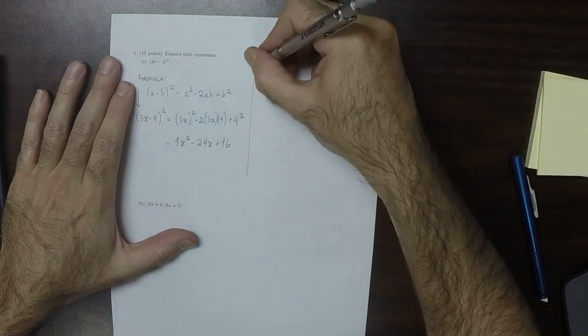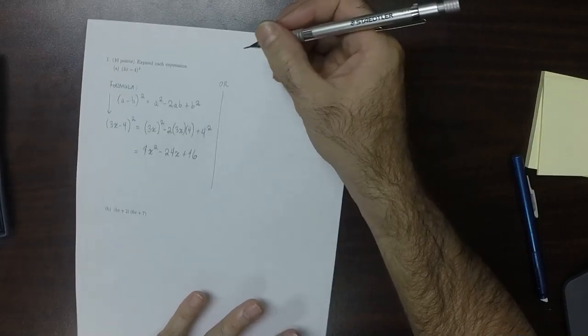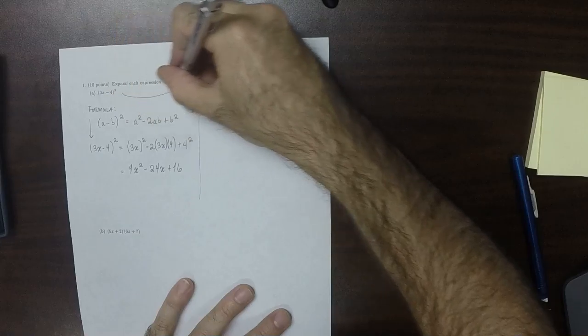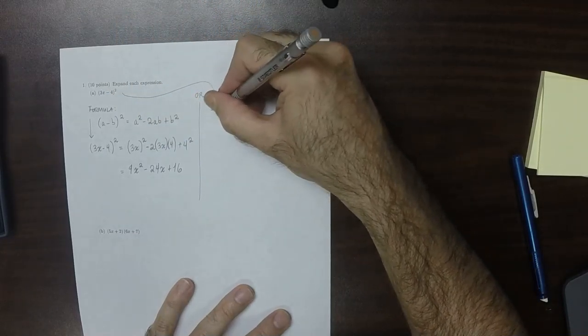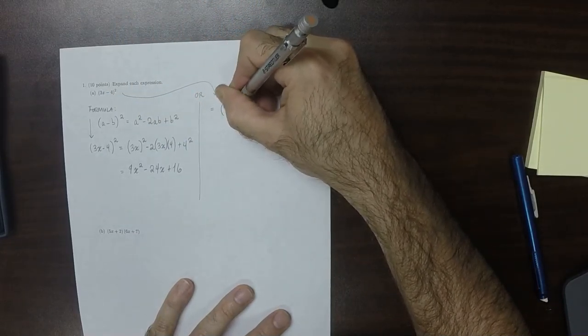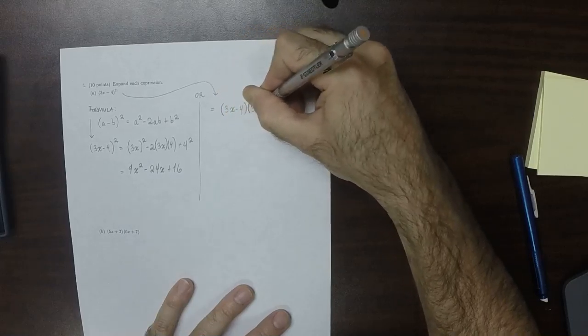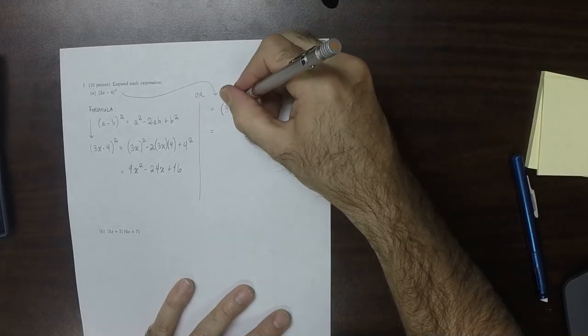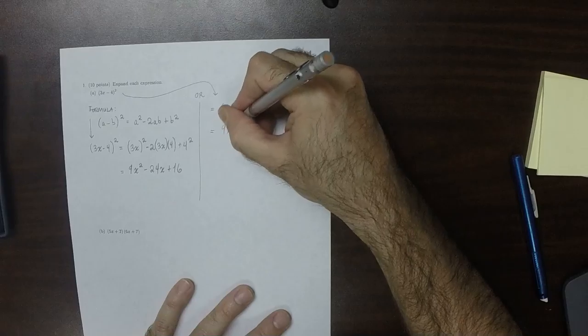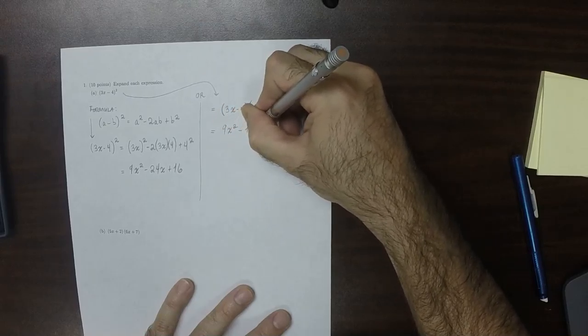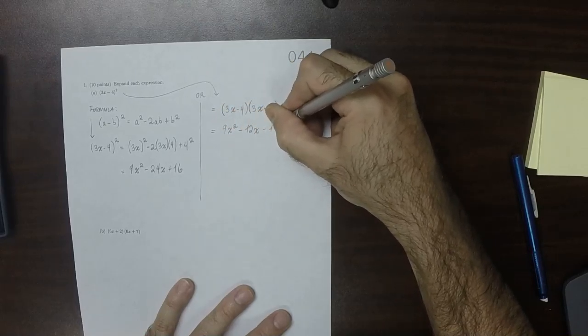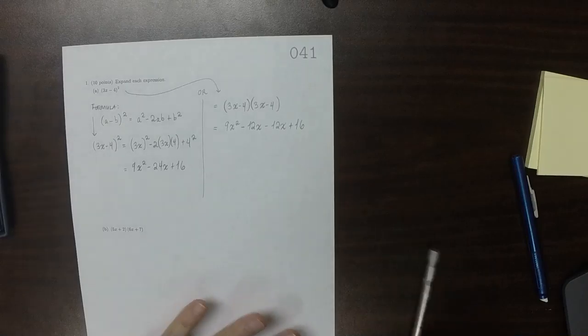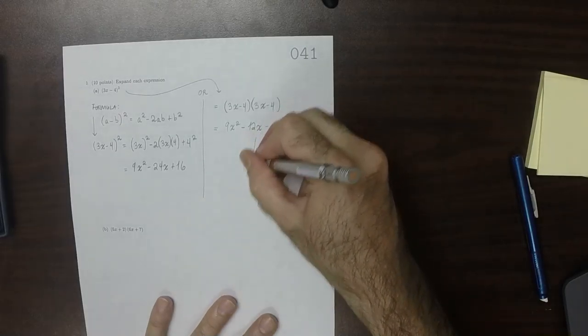Or, you could ignore the formula and say that that is equal to 3X minus 4 multiplied by 3X minus 4, and you could use FOIL to get 9X squared minus 12X minus 12 more X's plus 16, and of course, that's exactly this answer.